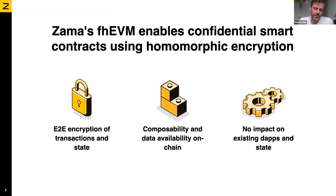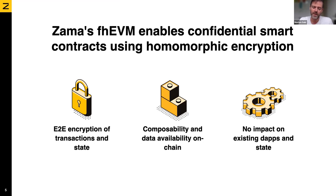In the blockchain setting, we can encrypt both the inputs to transactions, view functions, and also the state on the blockchain. Since we're encrypting everything under the same key, we get very nice composability. You can build your distributed application using different contracts and have the contracts call each other like you would in a normal service-oriented architecture. You can also mix data from different users, which is useful for building an auction or voting and so on.